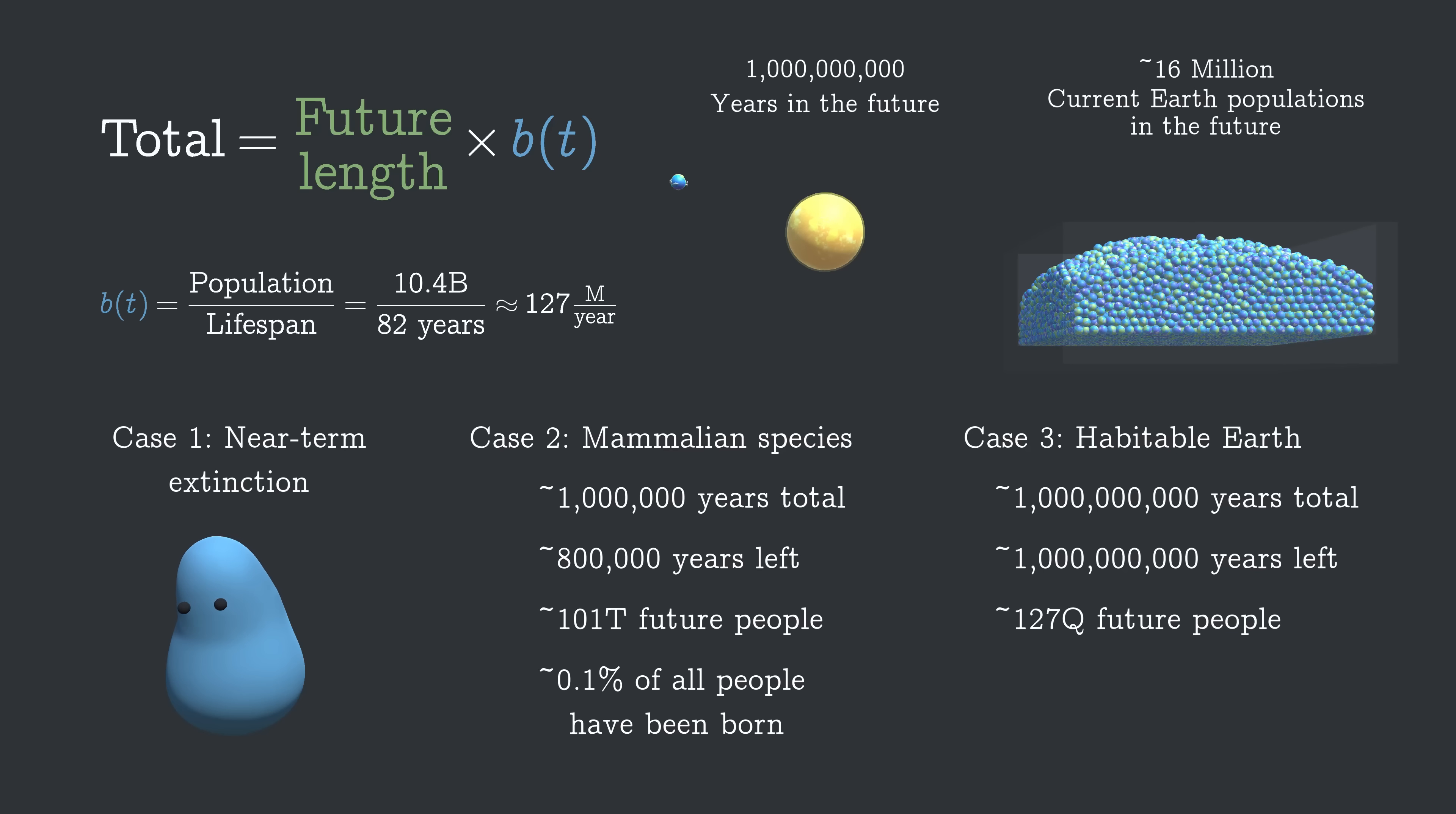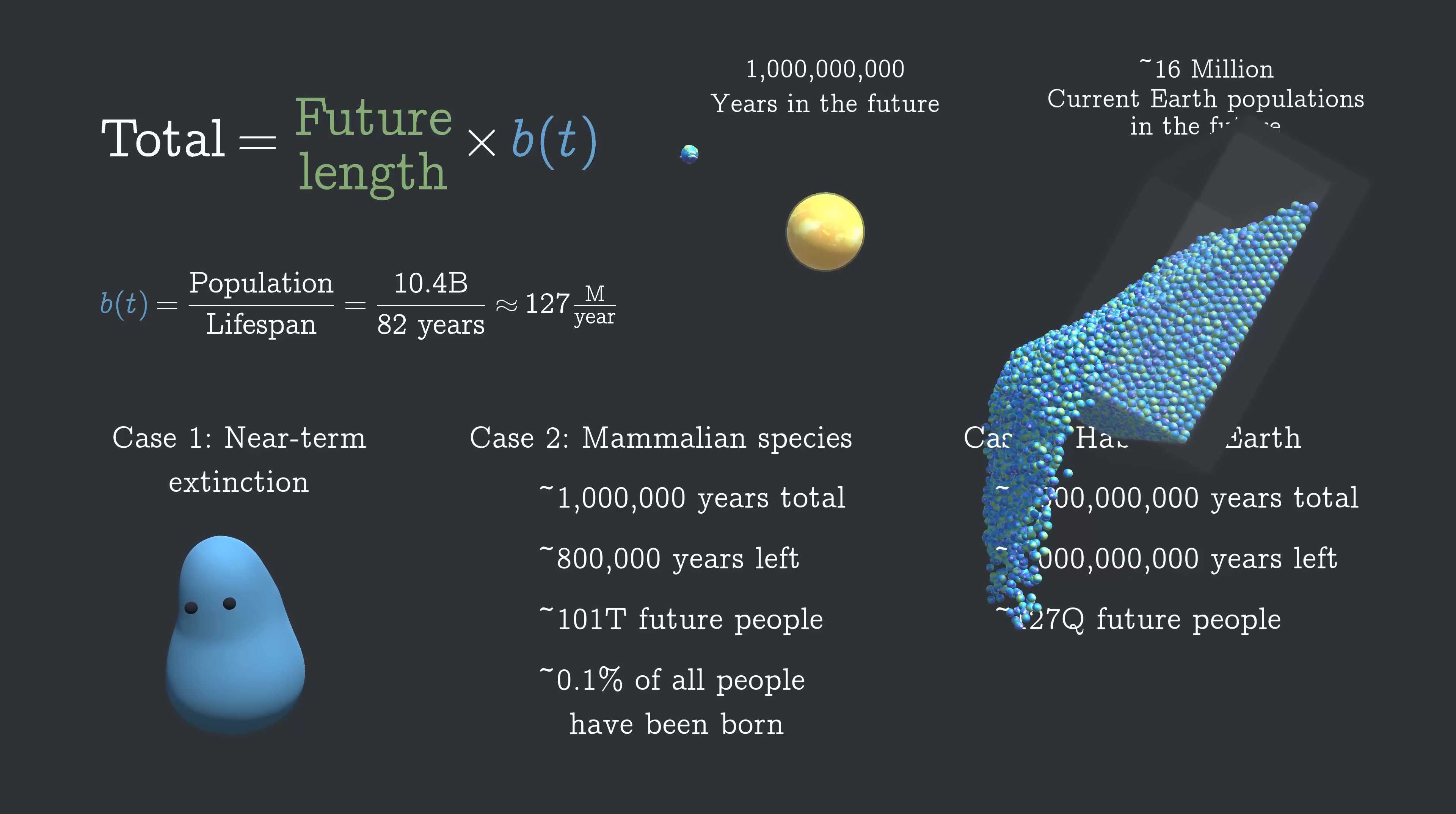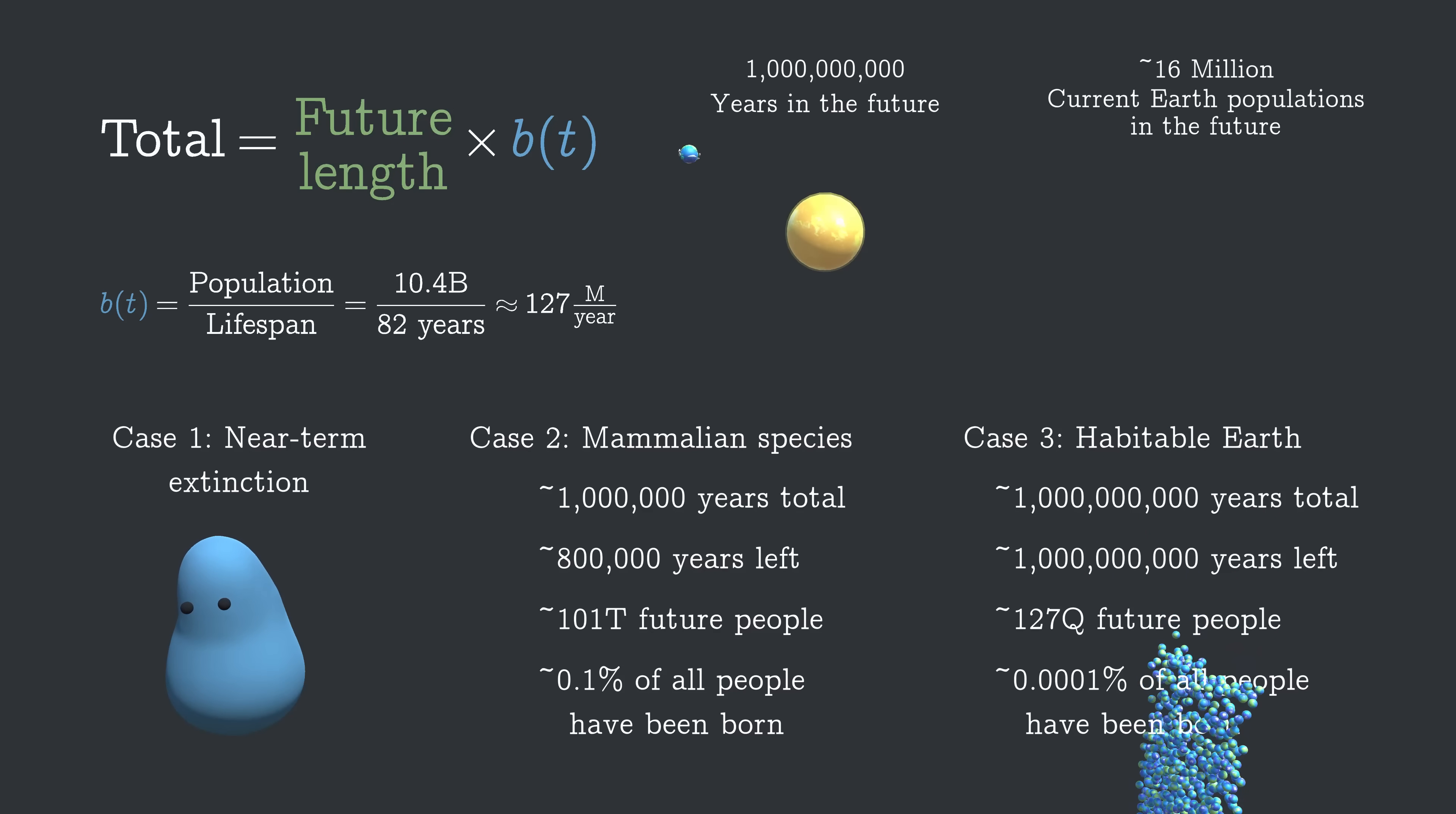All these globes from the last case were already as much as my computer could handle, so you're just gonna have to imagine 1,200 of these containers at once. Another way to think about it, if this many people eventually exist, the 117 billion people so far represent only about a millionth of all the people who will ever live.